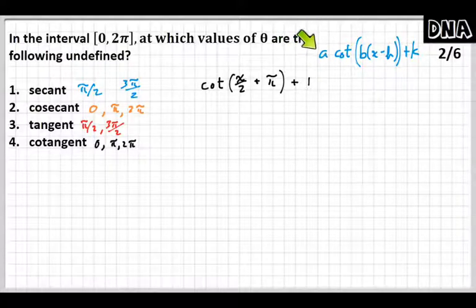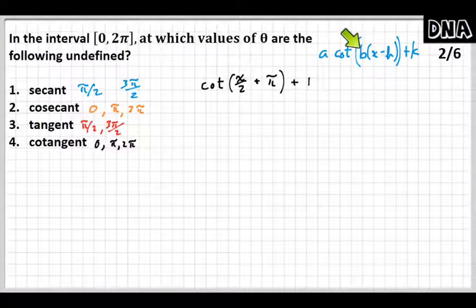The A is going to make the function look skinnier or fatter. B is going to change the period. If there's a B, it's going to manipulate the period. The H and the K are your shifts. The H shifts or phase shifts the function left and right, and the K moves the function up and down.